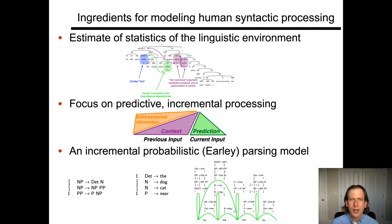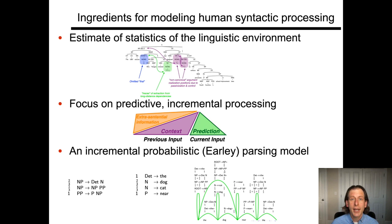We've now got most of the crucial ingredients for modeling human syntactic processing and language comprehension — that is, how we, in real time, identify the meaningful and structured relationships between words in a sentence, how words combine into phrases, phrases into larger phrases and ultimately into sentences, along which meaning composition occurs. Those ingredients include statistics of the linguistic environment, which we can estimate as researchers from samples of the kinds of data that humans are exposed to every day.